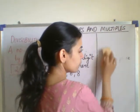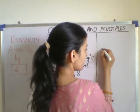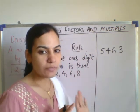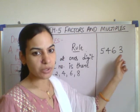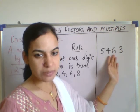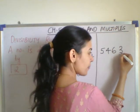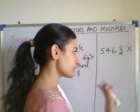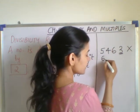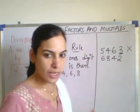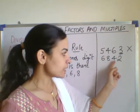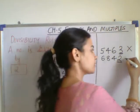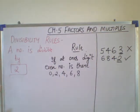Let us take another example. If I take a larger number like 5463 — without dividing, I can check whether this number is divisible by 2 or not. At the one's place, 3 is there. 3 is an odd number, so this number is not divisible by 2. Now taking 6842 — at the one's place, 2 is there. 2 is an even number, so 6842 is divisible by 2.